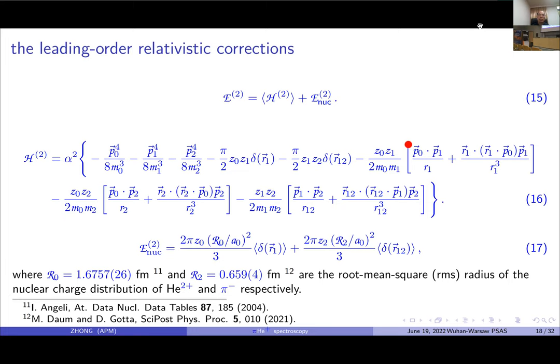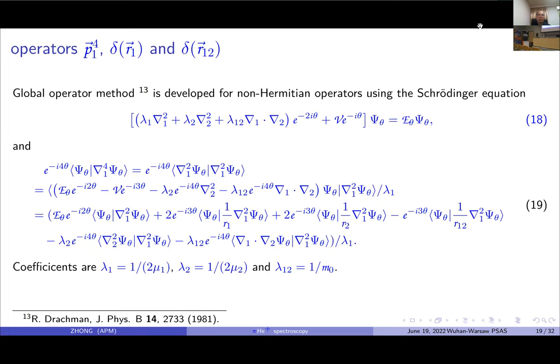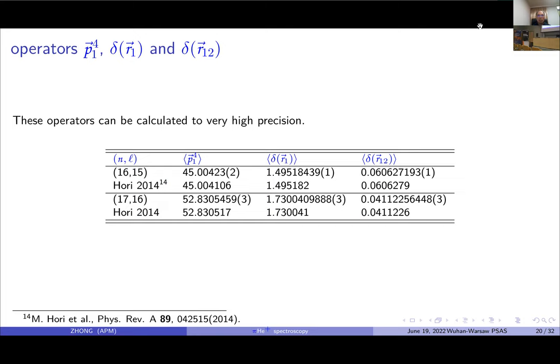Here, H2 is spin-independent Breit-Pauli Hamiltonian, including relativistic corrections of electron, the kinetic corrections of heavy particles, and retardation terms. For the operators appearing in the non-relativistic corrections, they should be calculated to very high precision. Therefore, we use the global operator method, which is applicable for non-relativistic operators using the Hellmann-Feynman equation under the CCR method. Therefore, the operator is expanded in several terms. Here is our result of these operators.